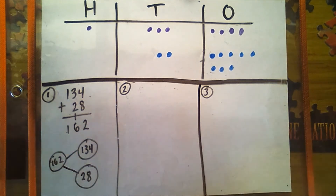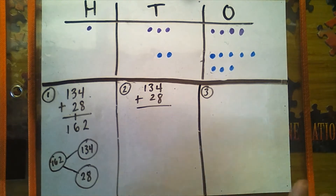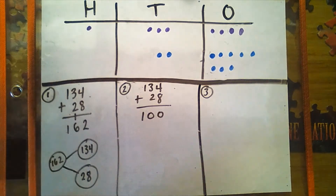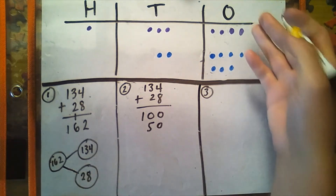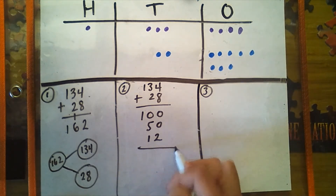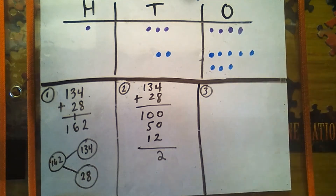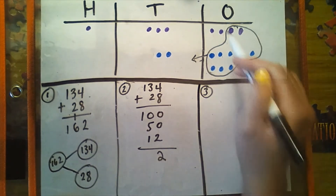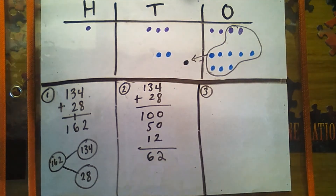Moving on to the second way we're going to solve our chip model. We agreed that my chip model showed 134 plus 28. I see one chip which is 100, then I see five 10s which represents 50, and then I see 12 ones. I keep in mind that 12 ones is the same thing as one 10 and two 1s. I have 2 ones left because I'm going to have to regroup, and then I have that new 10. So that means I have six 10s now and then still just one 100.